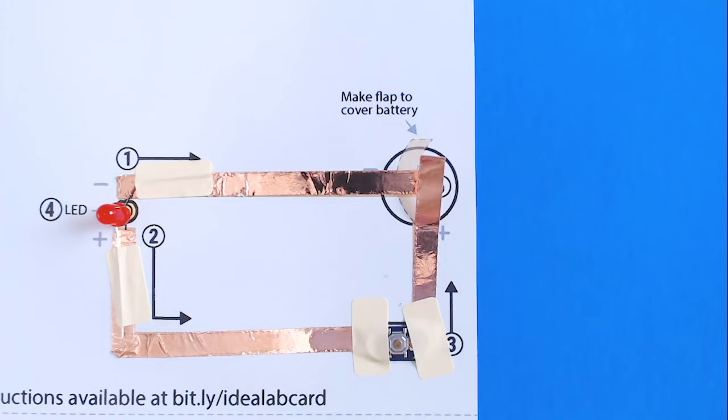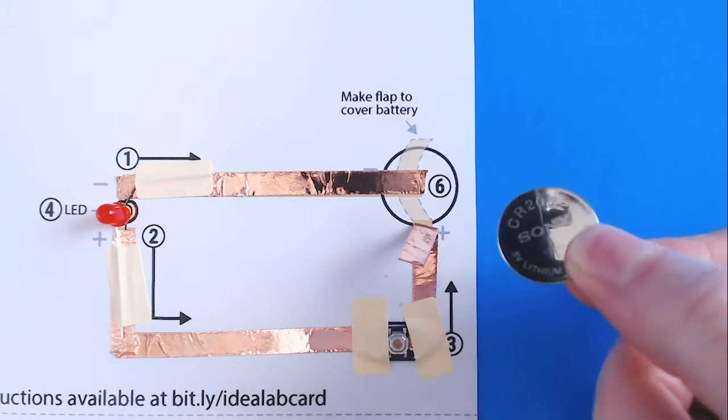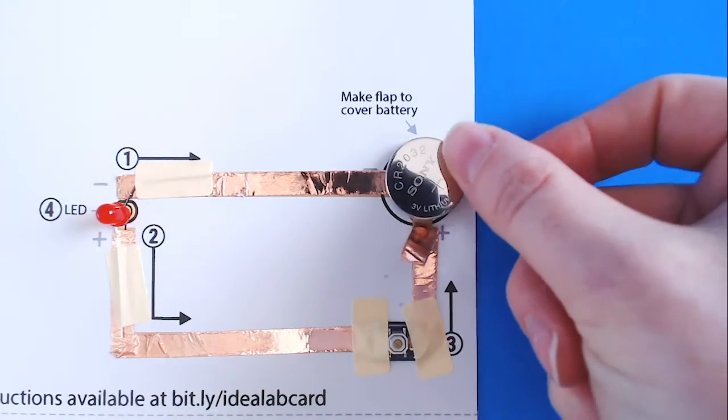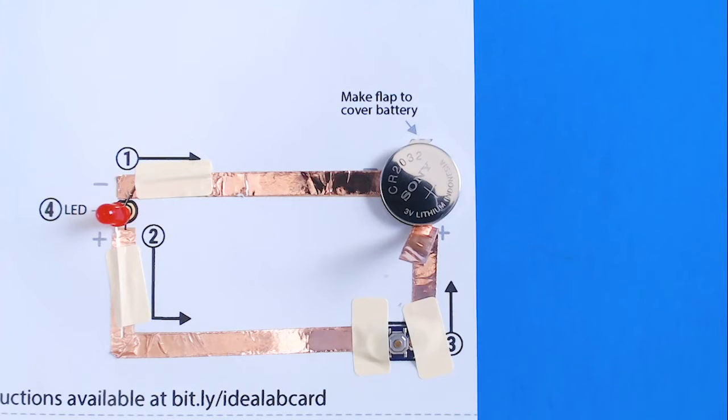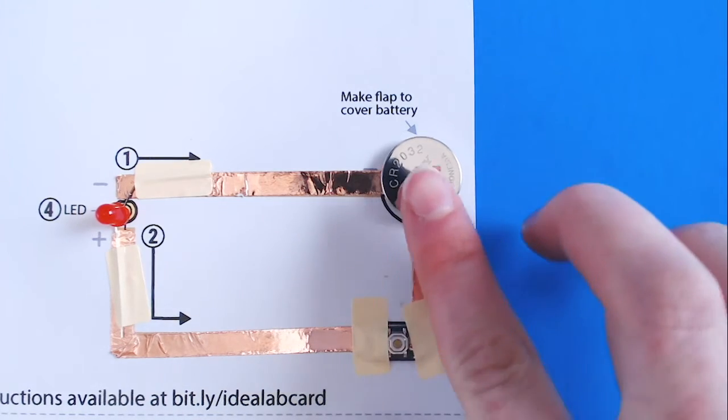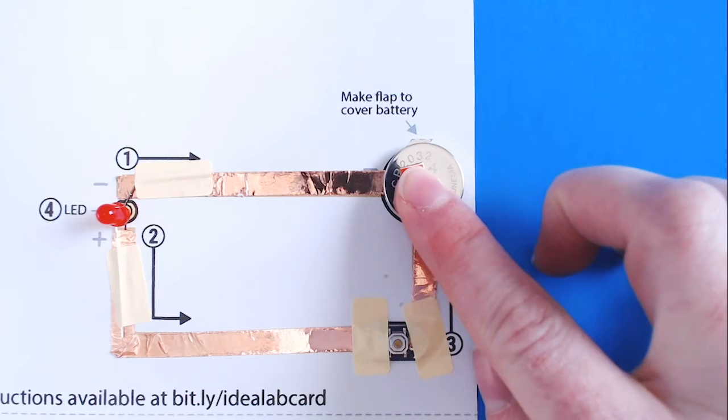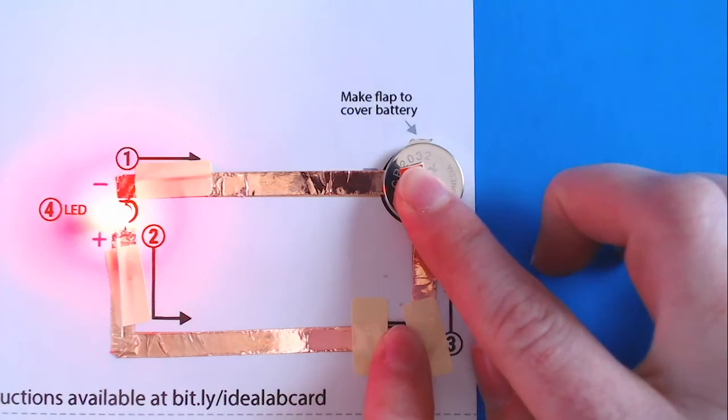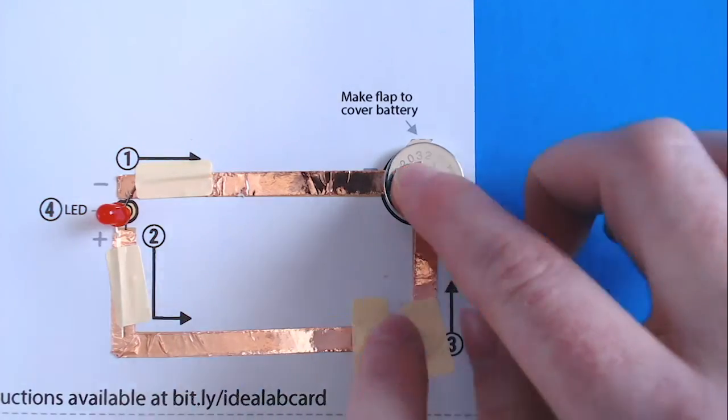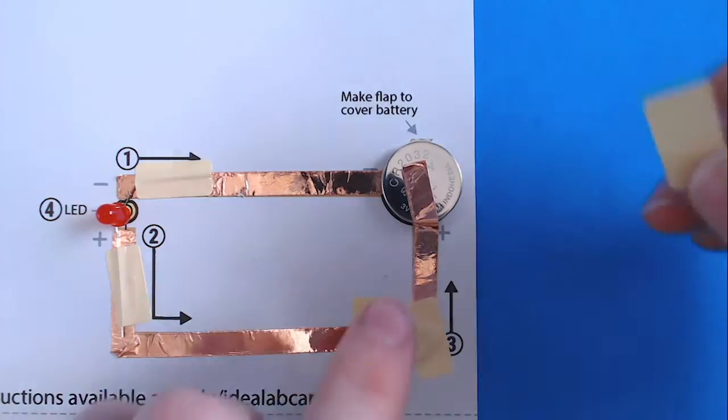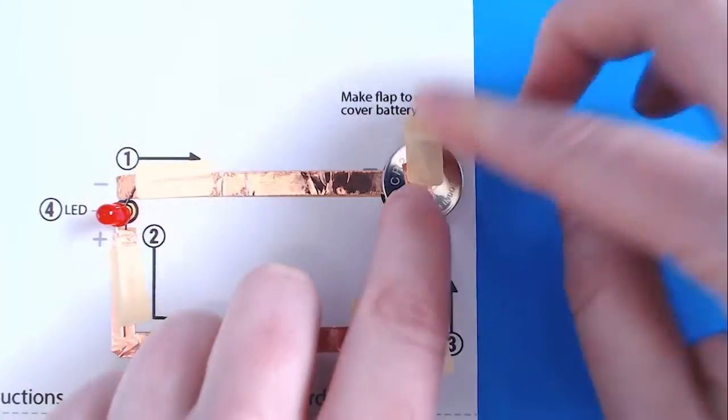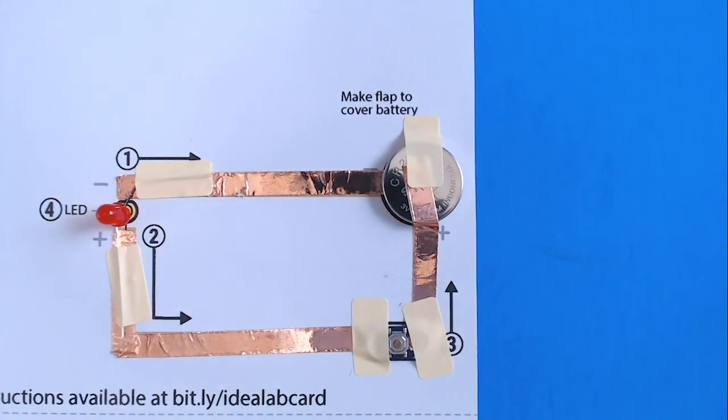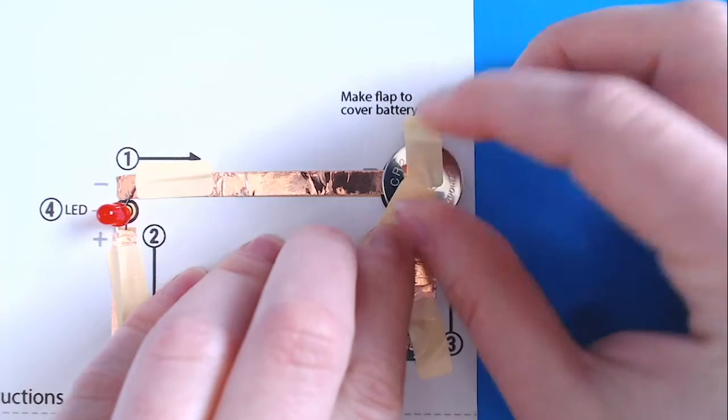The last part of the circuit is step six on the template right underneath our tape flap. Place the battery with the positive side facing up in the circle on the template. Then fold the copper tape flap on top of the battery. We can hold it there and test out our circuit by pressing the button. Your LED should light up. To hold the battery in place, use some tape over it. I like to do one side along the top and the other side to keep it from sliding around.